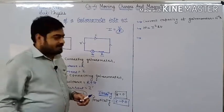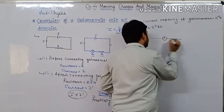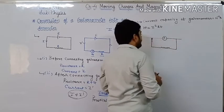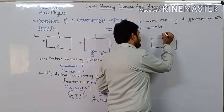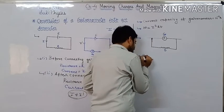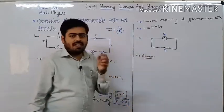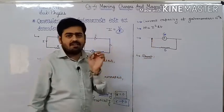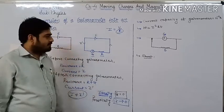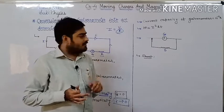To convert galvanometer into an ammeter, we should connect a shunt in parallel with the galvanometer. What is the meaning of shunt? Shunt is nothing but the smallest value of resistance connected in parallel with galvanometer. Why have we connected the smallest value of resistance in parallel with galvanometer?